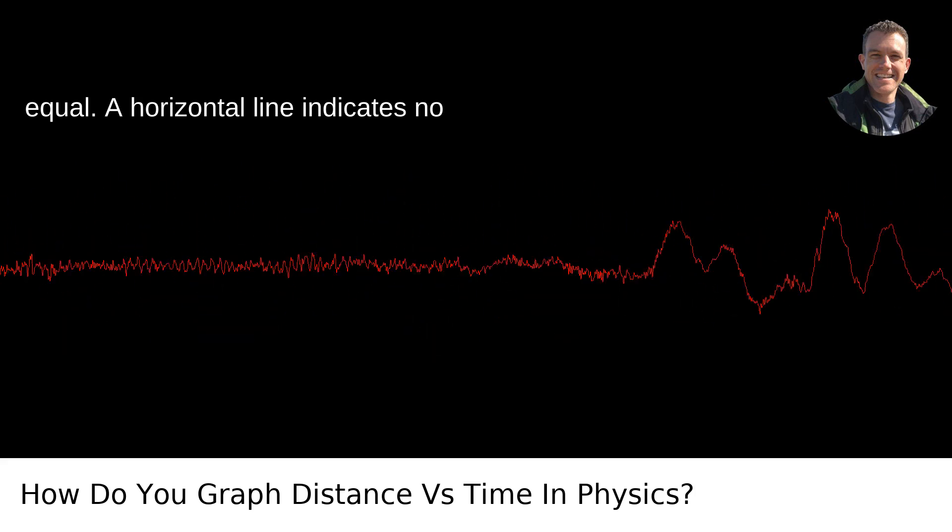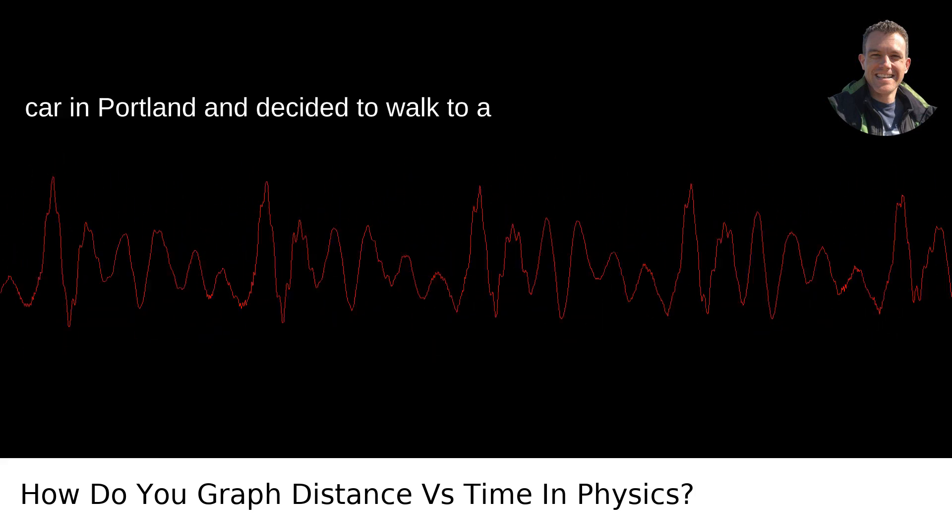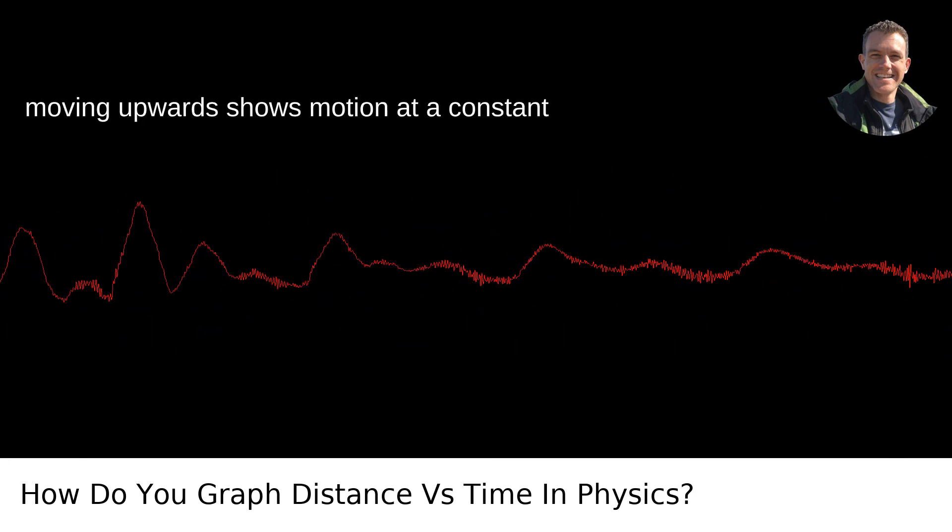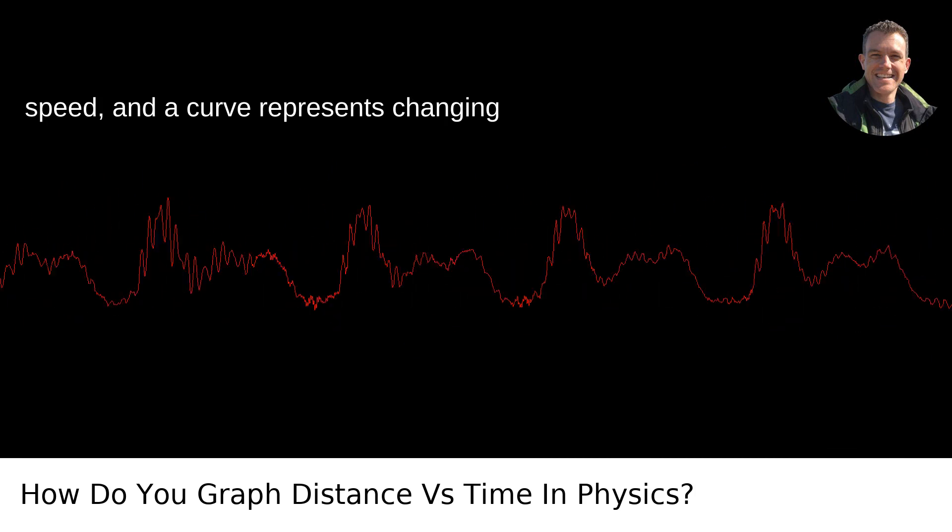A horizontal line indicates no change in position, like if I parked my car in Portland and decided to walk to a coffee shop instead. A diagonal line moving upwards shows motion at a constant speed, and a curve represents changing speed.